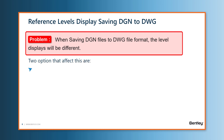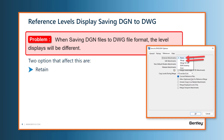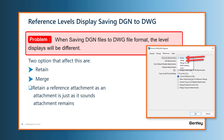Your two options are either to retain the reference file or to merge that reference file into the master file, and then you just have one DWG file. We'll see this in the demonstration video shortly. Retaining a reference attachment as an attachment is just as it sounds — it means that the master file gets converted, the references get converted, and these files are all saved in the same location.